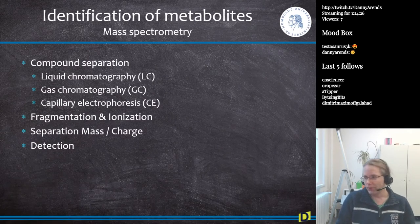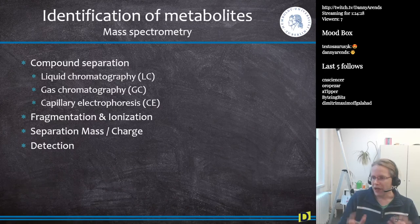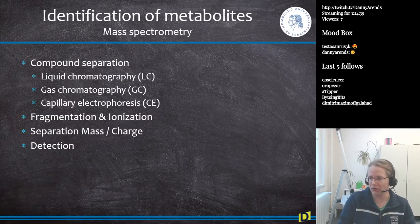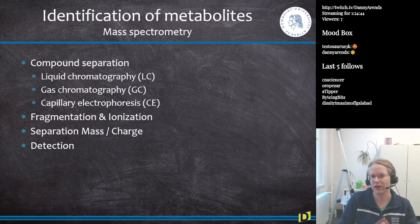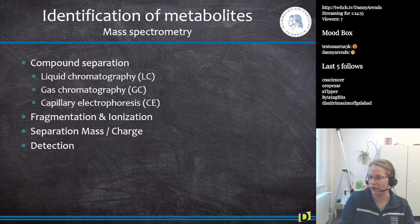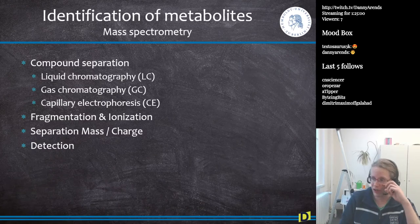Now the interesting part: mass spectrometry — how do we determine which metabolites are in a sample? Mass spectrometry consists of four steps: first, the separation of compounds; second, the fragmentation and ionization of the compound; third, the separation of fragments by their mass-over-charge ratio; and fourth, the detection of the mass-over-charge ratio.